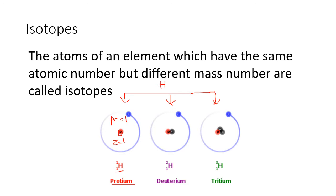The second is deuterium. In deuterium, you have one proton and one neutron. The atomic number is one, and the mass number is one proton plus one neutron, which equals two. So the hydrogen atom with two nucleons, of which one is a proton, is called deuterium.